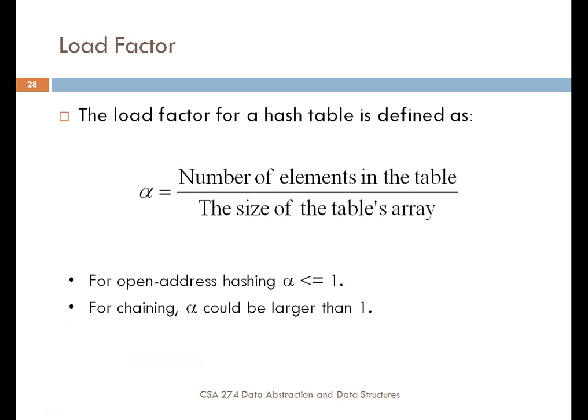An important issue in hash tables when using open address hashing is the idea of a load factor. The load factor for a hash table is defined as the ratio of the number of elements in the table over the size of the table's array. This basically tells you how full the hash table is. As the table becomes filled and you get closer to a load factor of one for open address hashing, the average time to find things in the table starts to increase as different clusters start to form. If you're using chaining or bucket addressing, alpha could actually be larger than one because you can have more elements in the table than the size of the actual array.